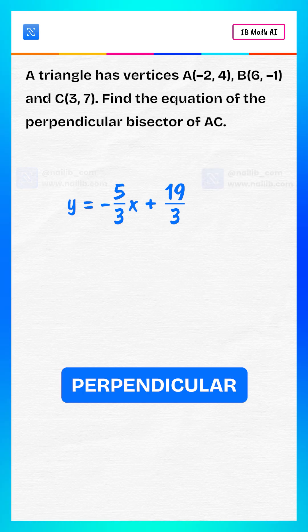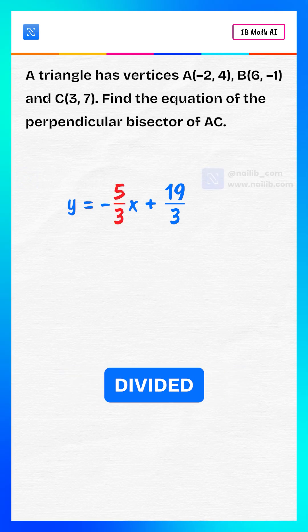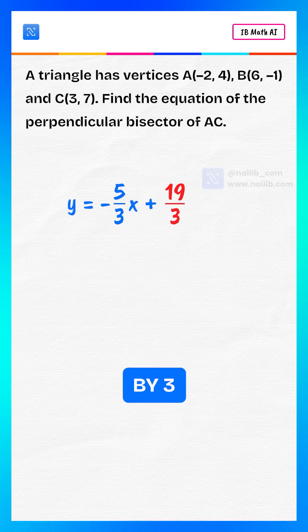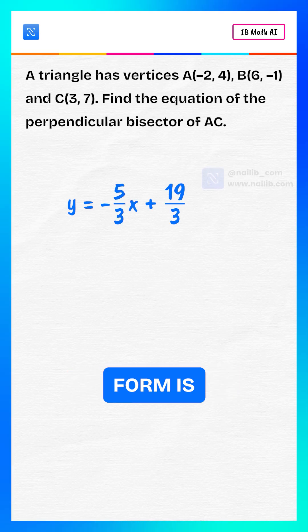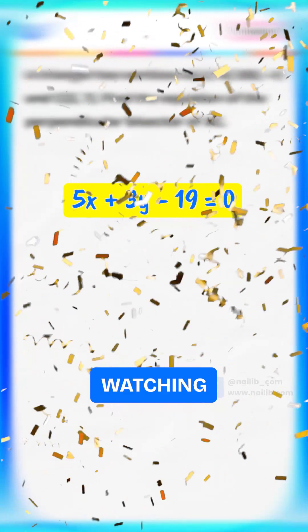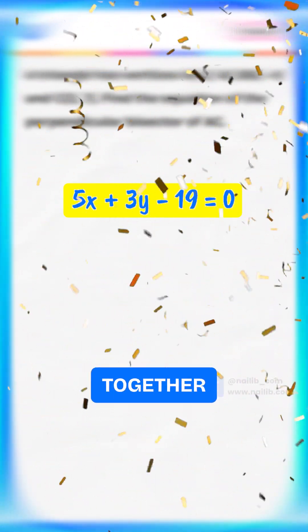So, the equation of the perpendicular bisector of AC is y = -5/3 × x + 19/3. The standard form is 5x + 3y - 19 = 0.